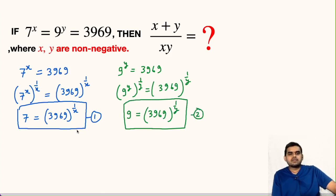Now we will multiply these two equations. So we can write 7 × 9 = 3969^(1/x) multiplied with 3969^(1/y).